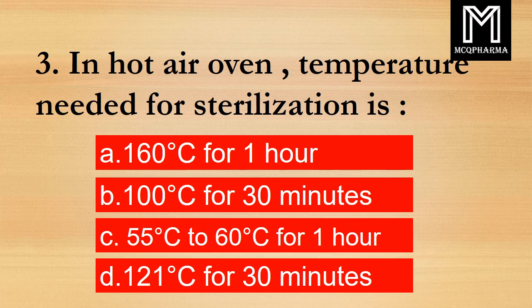Question number 3. In a hot air oven, the temperature needed for sterilization is? Option A: 160 degree Celsius for 1 hour. B: 100 degree Celsius for 30 minutes. C: 50 to 60 degree Celsius for 1 hour. D: 121 degree Celsius for 30 minutes. Correct answer: Option A, 160 degree Celsius for 1 hour.